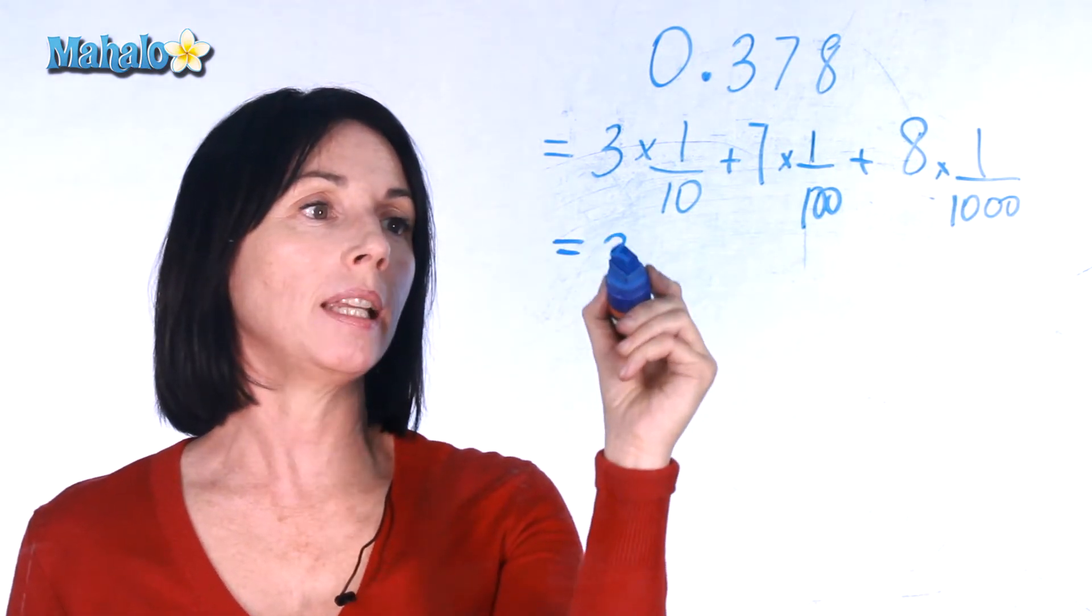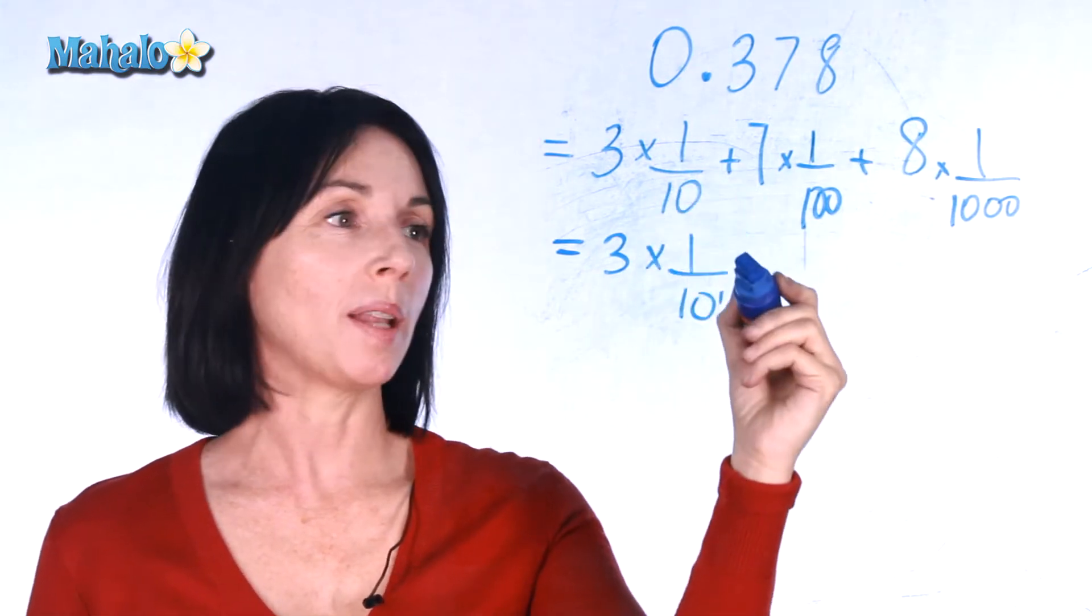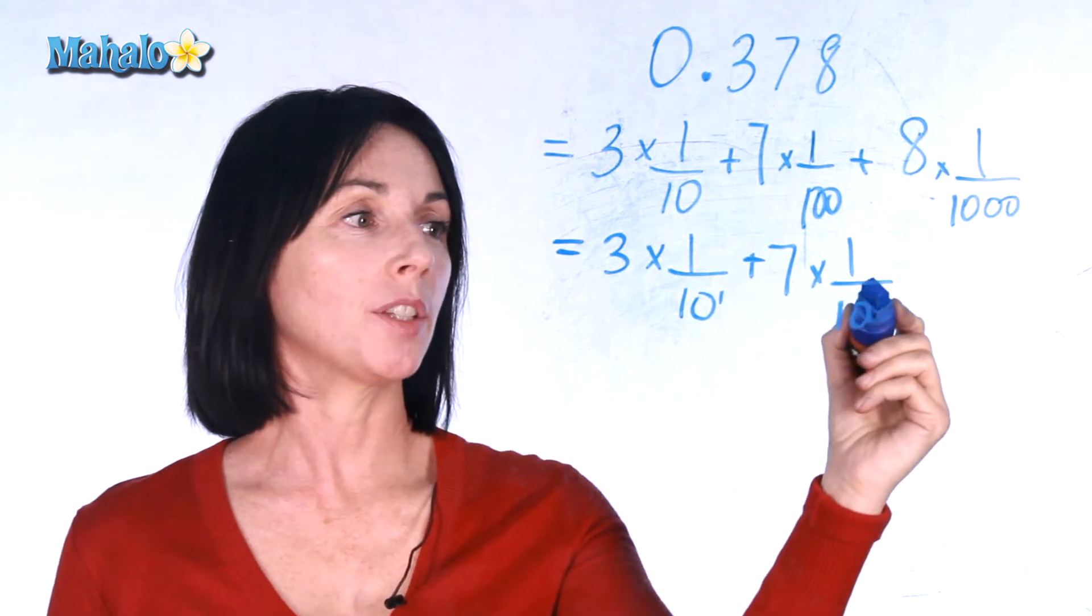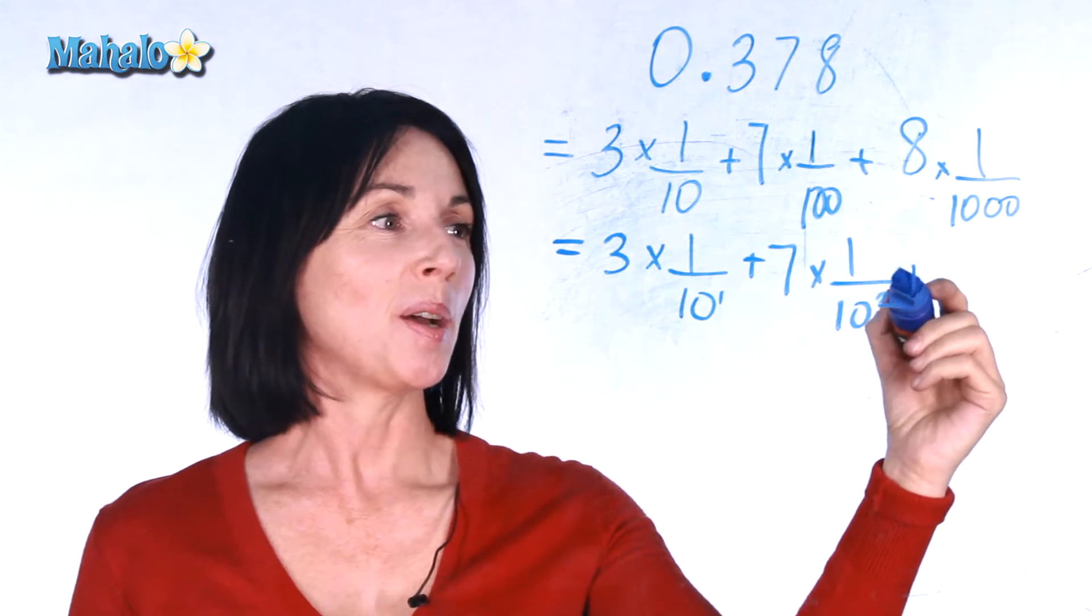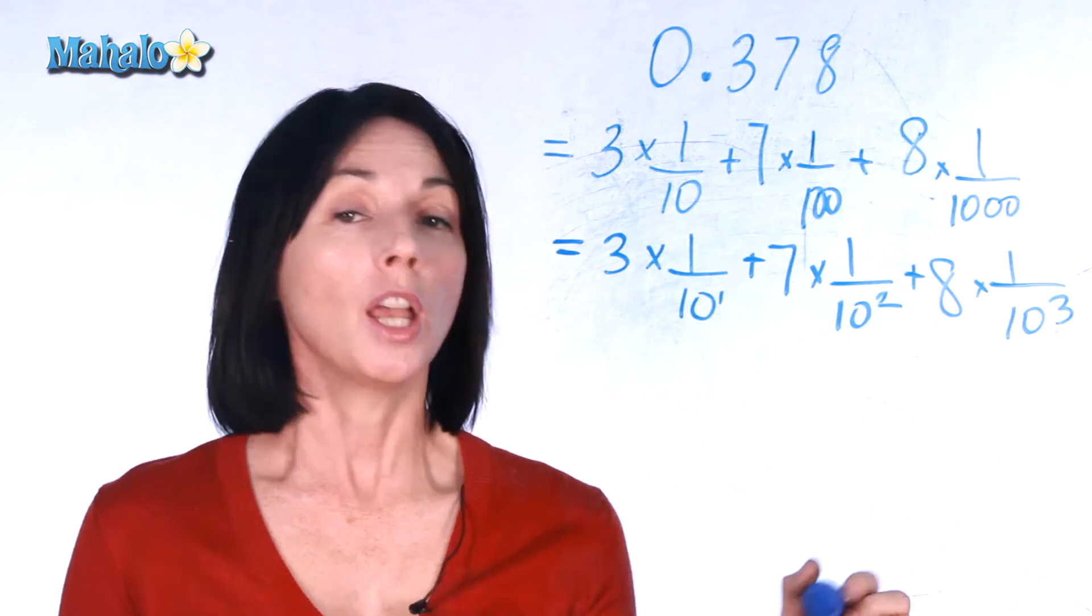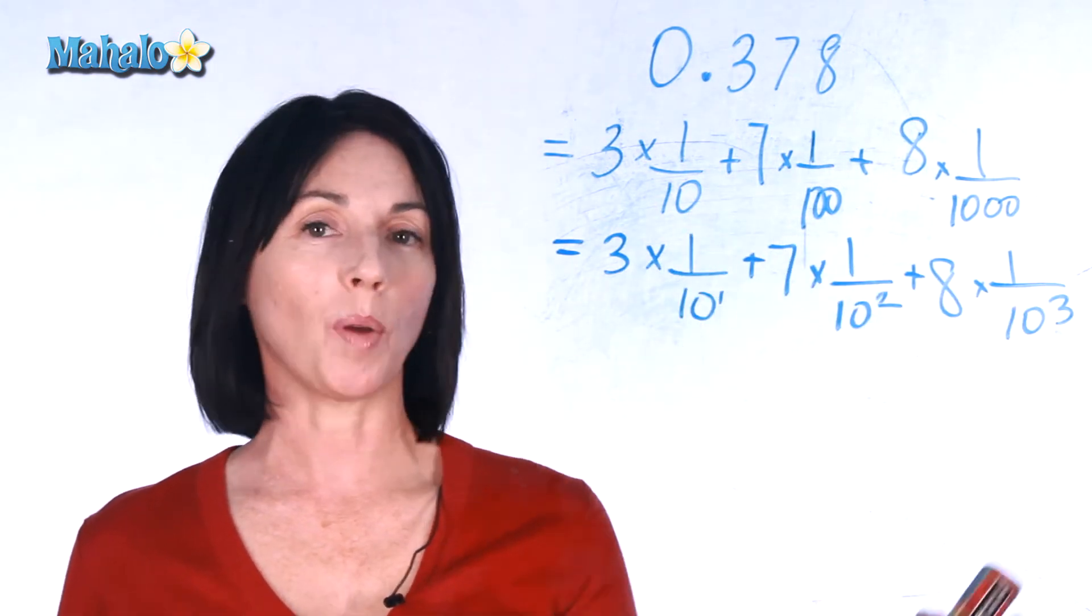So this gives us 3 times 1 over 10 to the power of 1, plus 7 times 1 over 10 to the power of 2. Don't forget two zeros gives me an exponent of 2. Plus 8 times 1 over 10 to the power of 3. So now instead of writing all these zeros, we have these nice clean looking exponents.